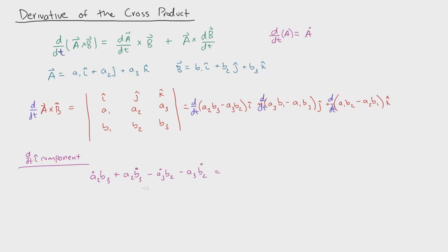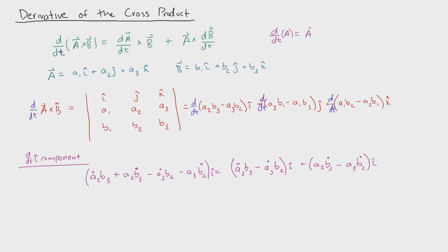Now I'm going to group these together so that the derivatives of a are on one side and the derivatives of b are on the other side. So I'll write ȧ2·b3 minus ȧ3·b2 in the i direction, plus a2·ḃ3 minus a3·ḃ2 also in the i direction. I split it up this way because we're going to notice a pattern later on.